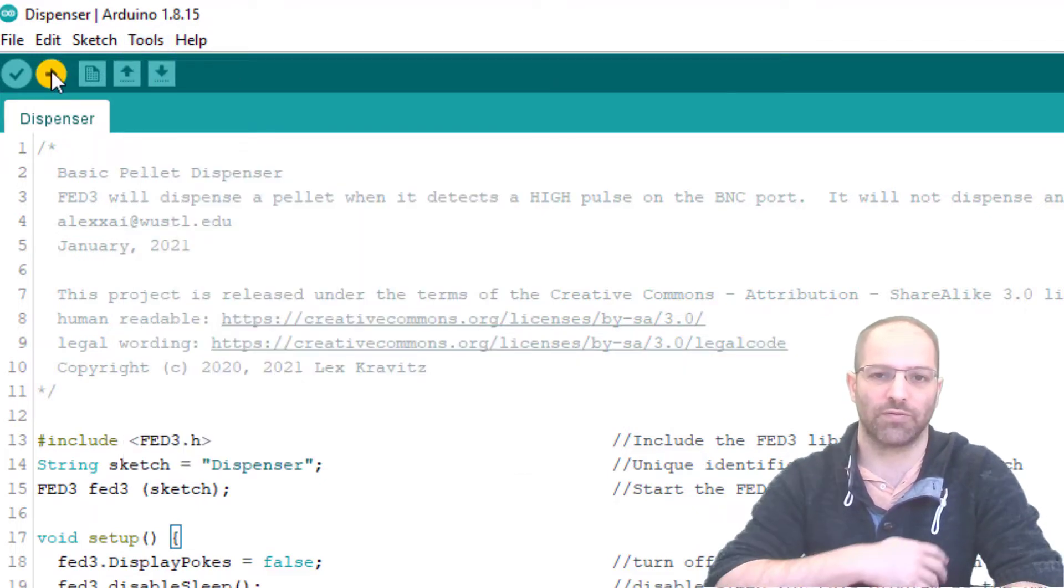So if I go over here to the Arduino IDE, I'm on this dispenser example program, it doesn't really matter. But we want to be on the right board, the Adafruit Feather M0. And then you should see it in the port, the Adafruit Feather M0. And that will let you flash code to it.